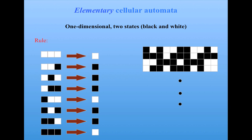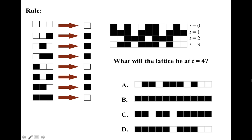So guess what? It's time for a quiz. The quiz gives you a rule, the same rule we were looking at before, and says after time step three, from this state of the lattice, what will the lattice be at time step four?